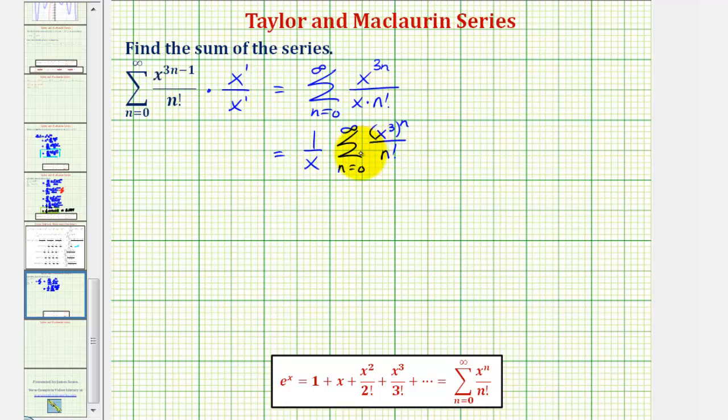So notice now, our power series is exactly like the power series for e to the x, except instead of x we have x to the third, which means this sum would be equal to 1 divided by x times not e to the x, but e raised to the power of x cubed.